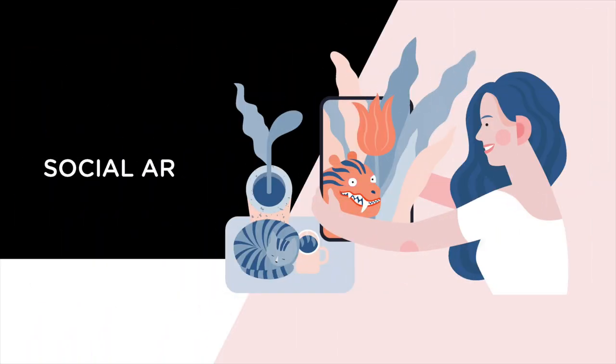Social AR is augmented reality camera filters or lenses viewed through social apps such as Facebook, Instagram, and Snapchat. Many social networks have AR capabilities. It is a digital interactive interface presented inside our real-world context. AR at its core is interacting with the world around you through superimposed images.